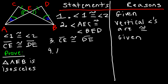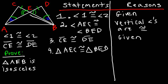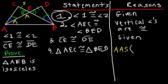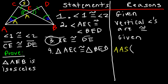Statement four: triangle AEC is congruent to triangle BED. The reason: AAS postulate — we have an angle, an angle, and a side. The first angle came from statement one, the second angle (vertical angles) from statement two, and the side from statement three. So the reason is AAS, statements one, two, and three.